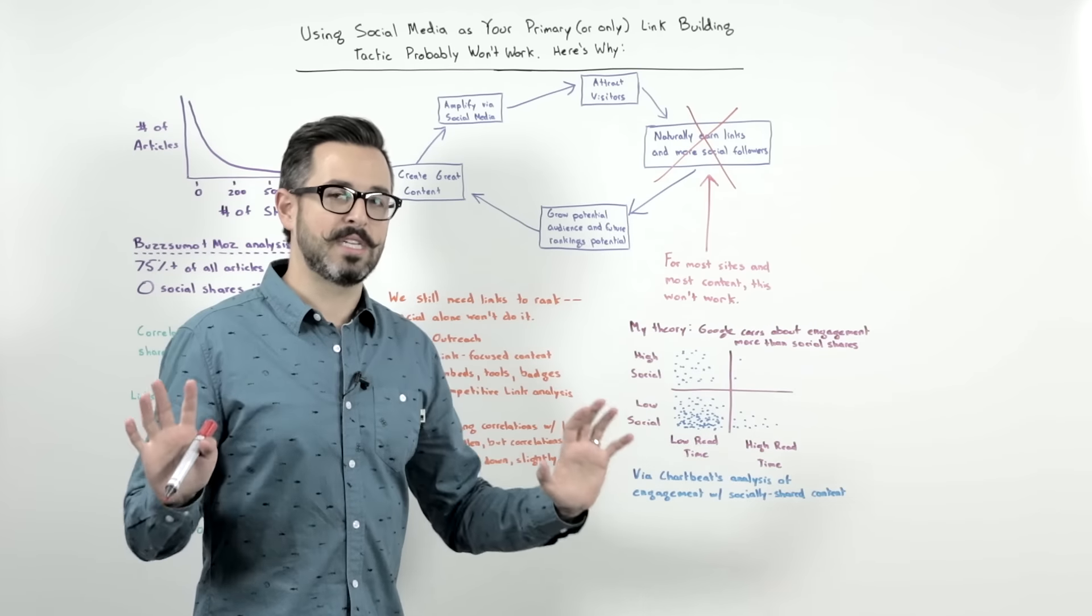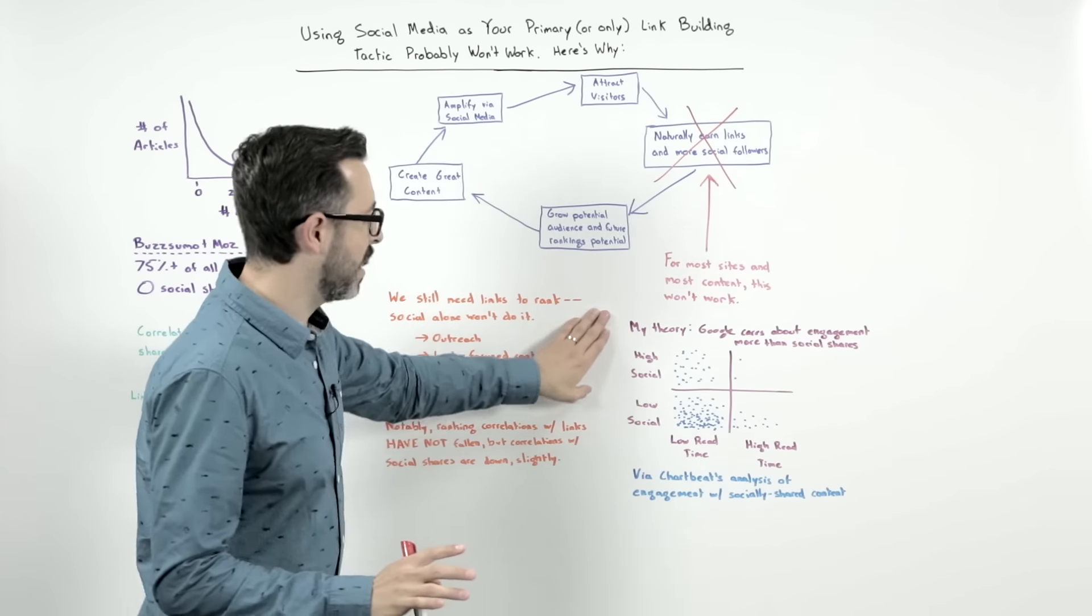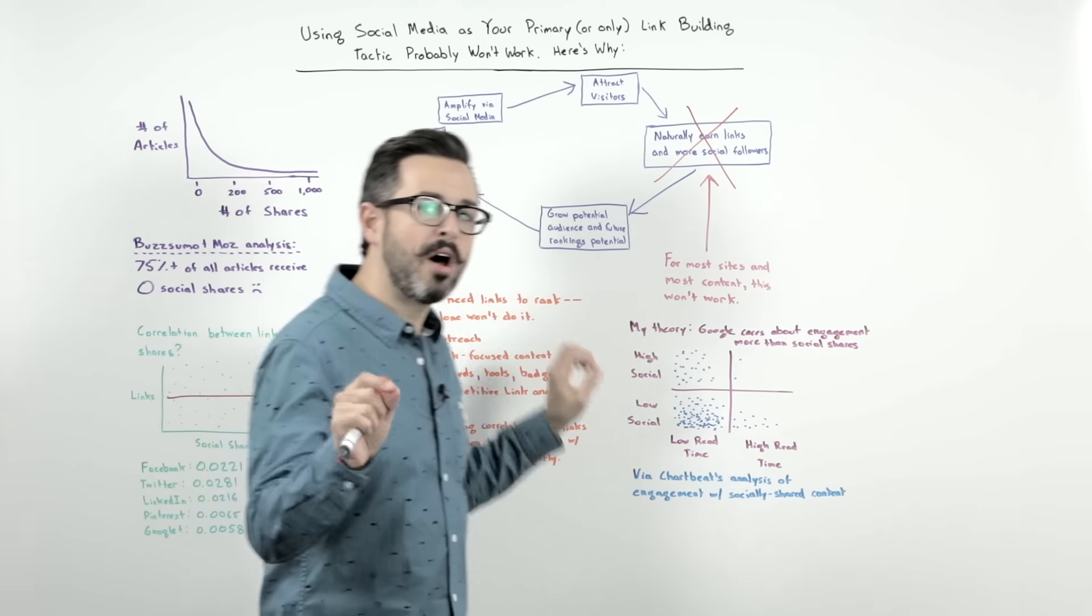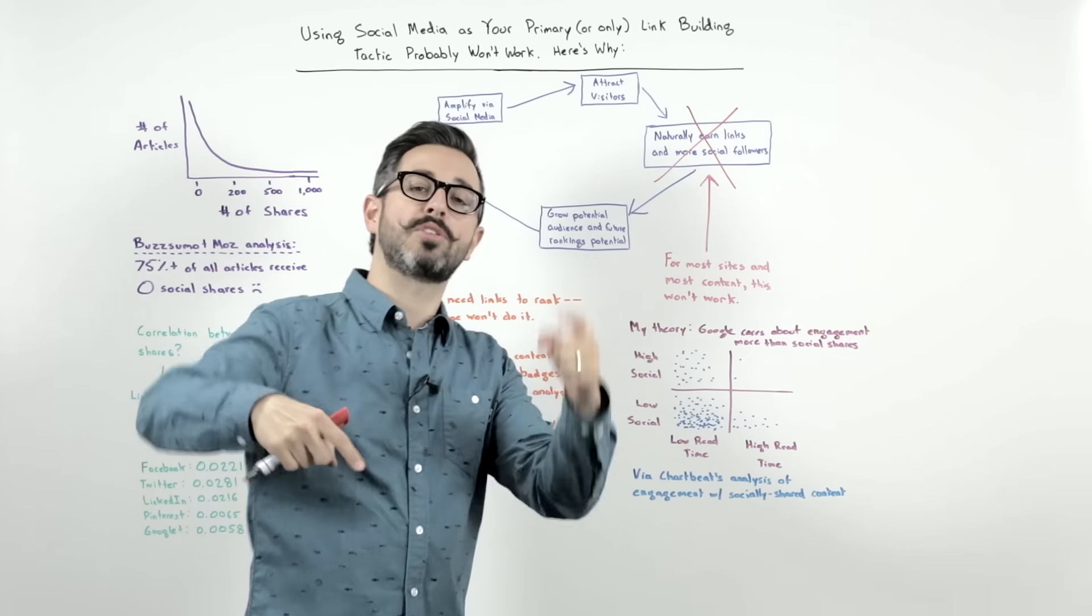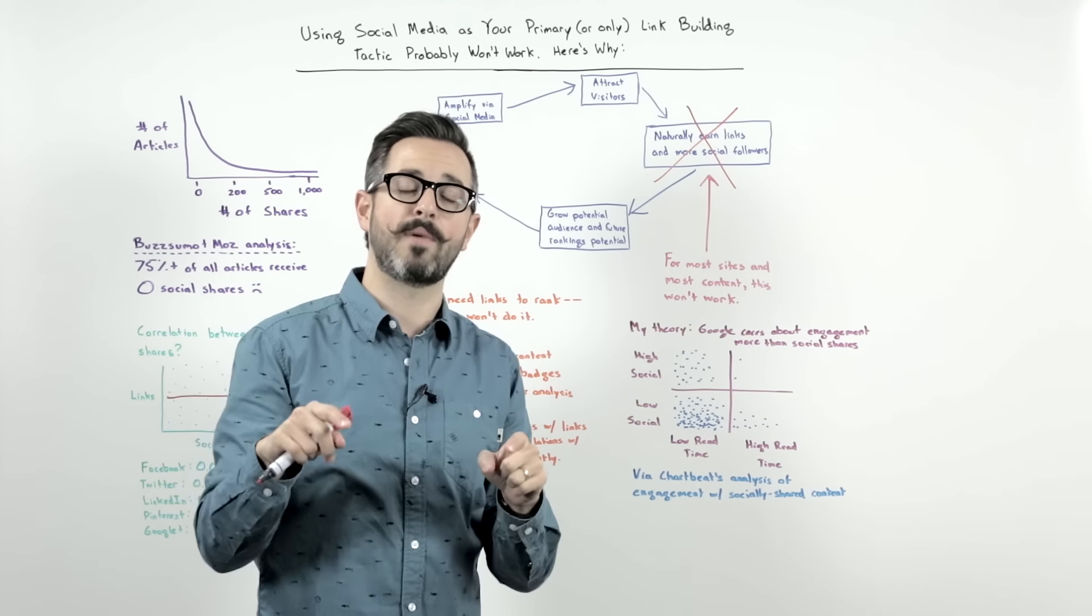I have a theory about why this is. I think Google is honest when they tell us we don't look at social shares to determine rankings.